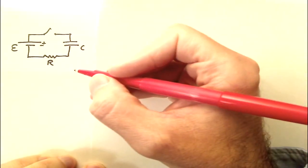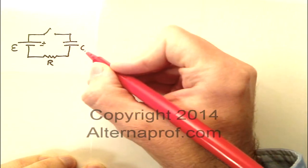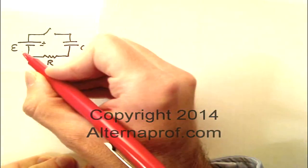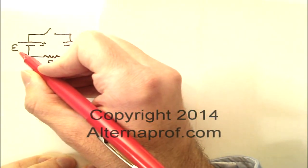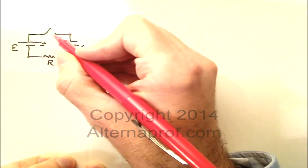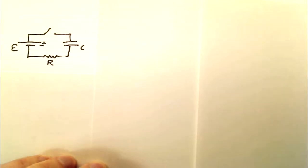Here we have an RC circuit. There's an R, a resistor, a C, a capacitor, an E for EMF or electromotive force, and then we have a switch which is currently open.